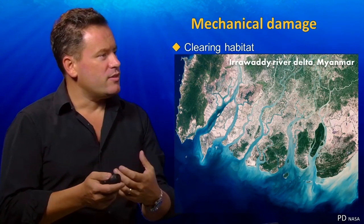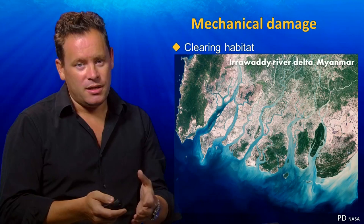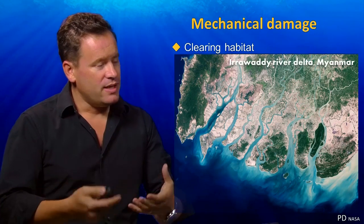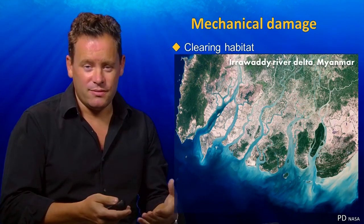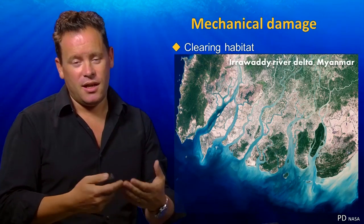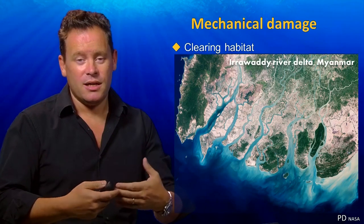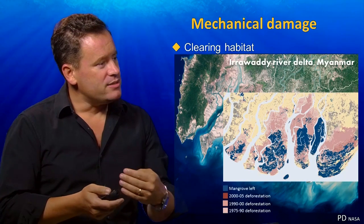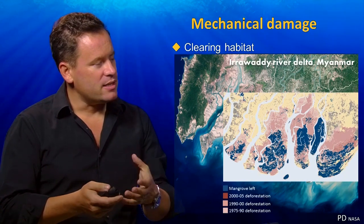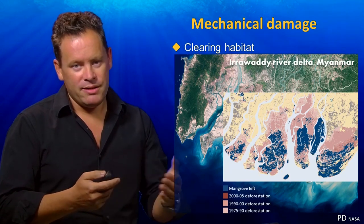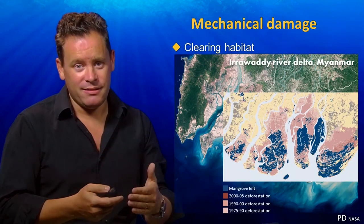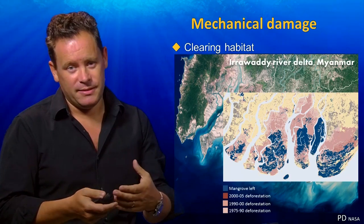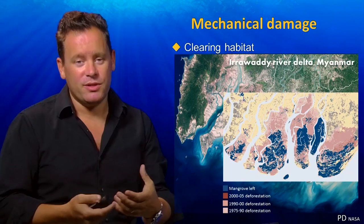Here's an example from the Irrawaddy River Delta of Myanmar, formerly known as Burma. This is a large natural river delta that was historically dominated by mangroves, but because of pressures for food, large areas have been cleared to provide rice paddies. Going back to the early 1970s, the yellow-coloured areas were cleared over about a 15-year period, the pink areas in the next decade, and what's left in blue is the small fragment of mangrove that remains today.